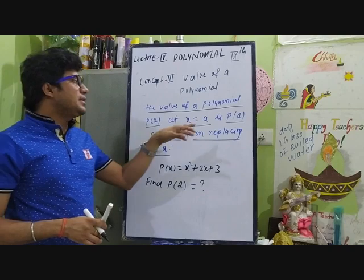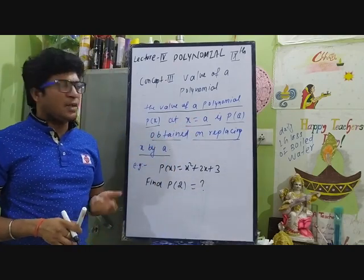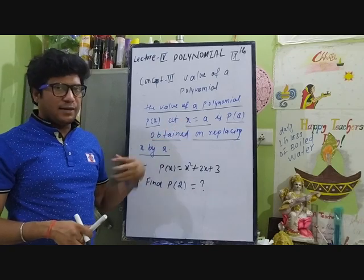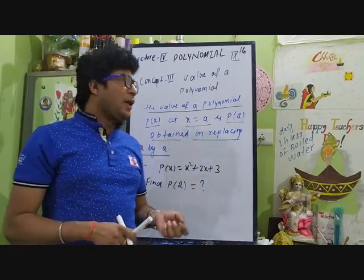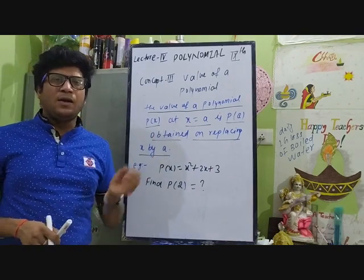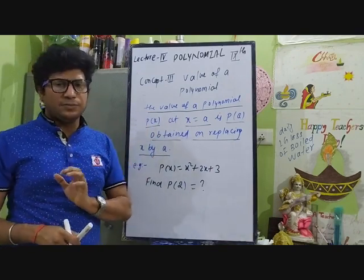Where a is a real number and x is the variable. If we substitute any real number into any polynomial, we can find out the constant value.